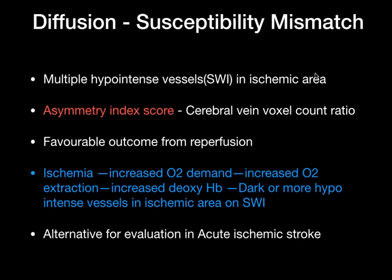In our case there is a large area of diffusion susceptibility mismatch, which indicates that the person has a favorable outcome if reperfusion is done in time. Why does this occur? In ischemia there will be an increased oxygen demand, which leads to increased oxygen extraction, increased deoxyhemoglobin content within the vessels, and more darker, more hypointense vessels on SWI. This gives the helpful finding called diffusion susceptibility mismatch.